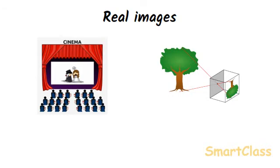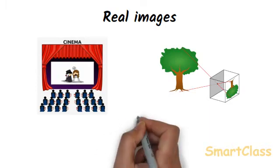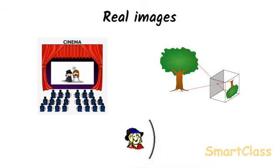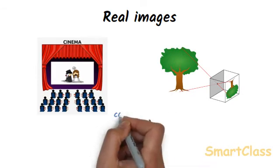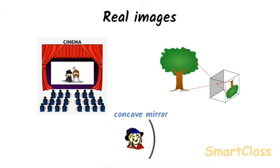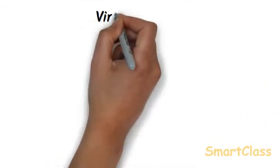A real image is formed when light rays coming from an object actually meet at a point after reflection from the mirror. A real image can be formed on a screen because light rays actually pass through it. Real images can be formed by curved mirrors known as concave mirrors. We will study this in detail in higher classes.